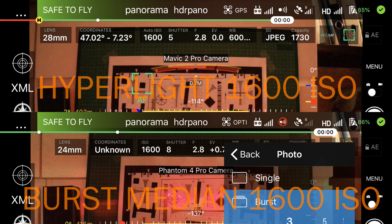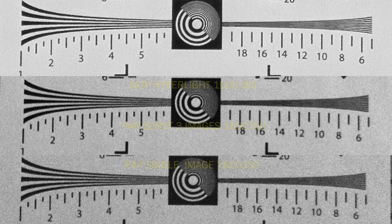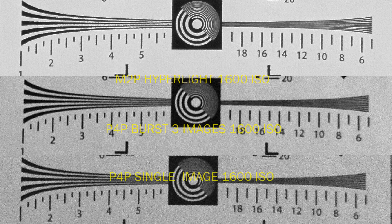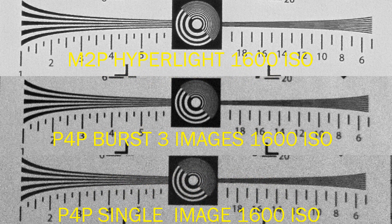Now let's compare low light conditions. I used Hyperlight on the Mavic 2 Pro and the burst median Photoshop settings for the Phantom 2 Pro.